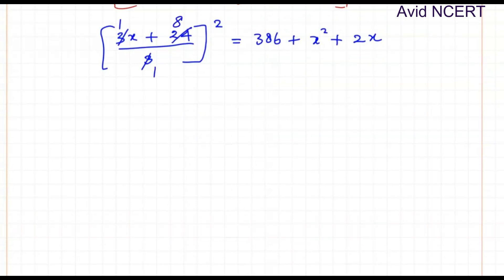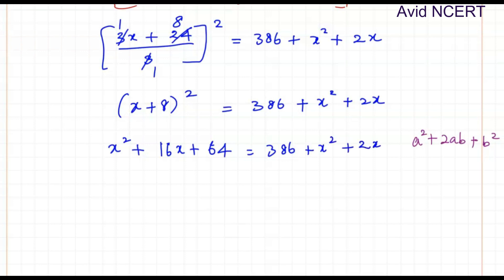So x plus 8 the whole square equals... Using the formula a squared plus 2ab plus b squared, here it is x squared plus 16x (8 times 2 is 16x) plus b squared which is 8 squared is 64, equals 386 plus x squared plus 2x.